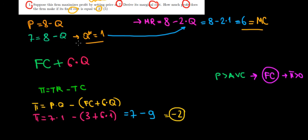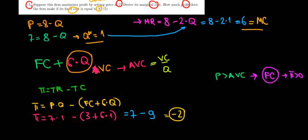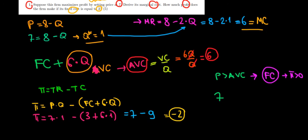To check this, we need the average variable cost. The variable cost in our cost function is 6Q, so the average variable cost is 6Q divided by Q, and the quantities cancel out — giving an average variable cost of 6. The price is 7 and the average variable cost is 6, so the price does cover the average variable cost. It's worth for the monopolist to stay in the market and recover losses to make positive profit in the long run. In the next video we'll keep solving when the monopolist is actually discriminating.